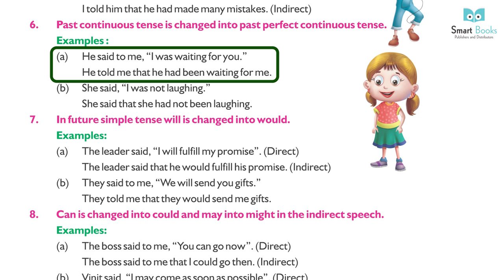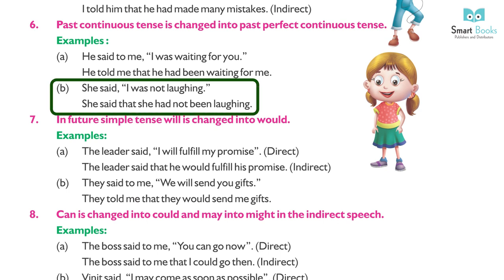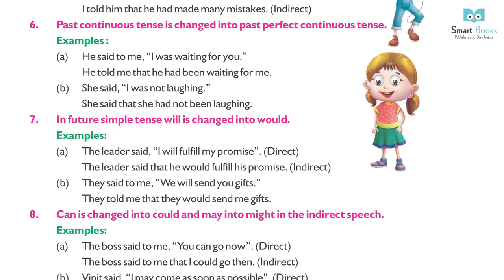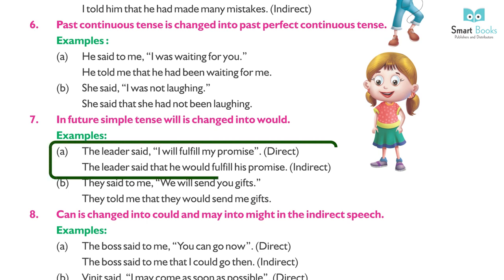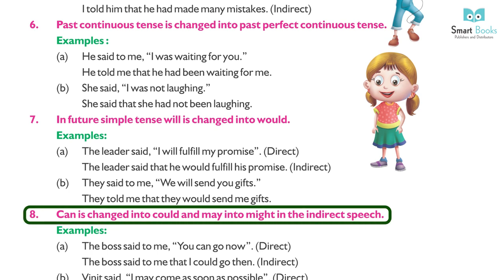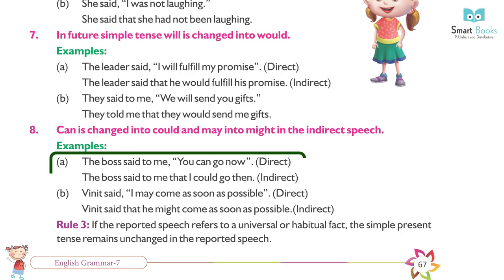Examples for Past Continuous → Past Perfect Continuous: (a) He said to me, 'I was waiting for you.' → He told me that he had been waiting for me. (b) She said, 'I was not laughing.' → She said that she had not been laughing. (7) In Future Simple, 'will' changes to 'would'. Examples: (a) The leader said, 'I will fulfill my promise.' → The leader said that he would fulfill his promise. (b) They said to me, 'We will send you gifts.' → They told me that they would send me gifts.